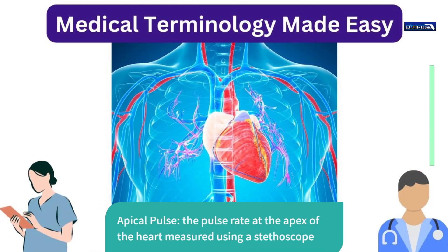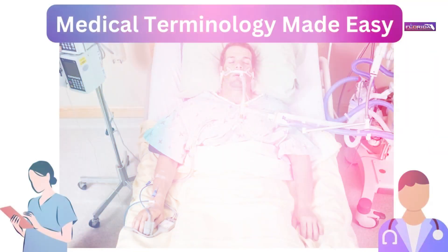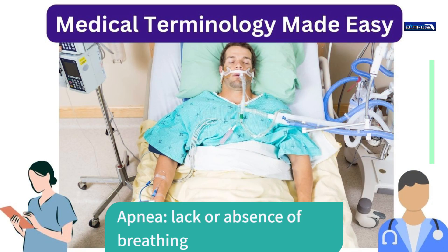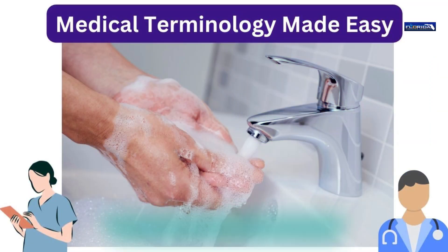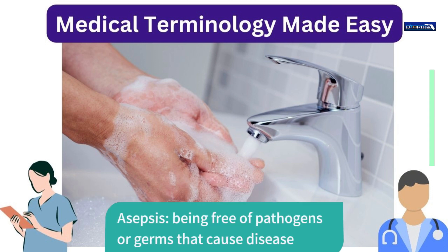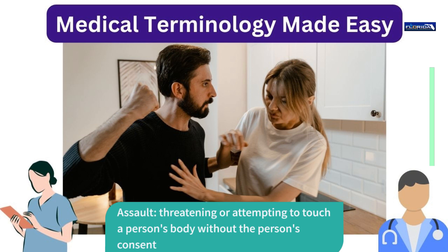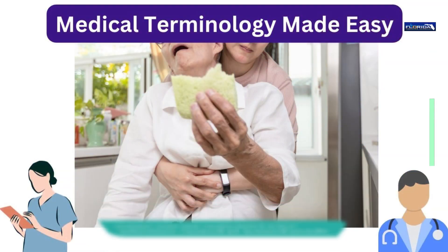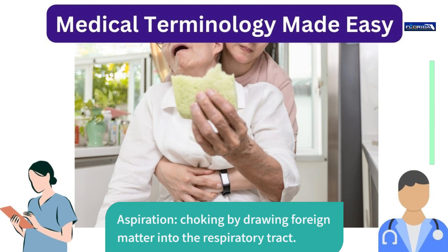Apical pulse: the pulse rate at the apex of the heart, measured using a stethoscope. Apnea: lack or absence of breathing. Asepsis: being free of pathogens or germs that cause disease. Assault: threatening or attempting to touch a person's body without the person's consent. Aspiration: choking by drawing foreign matter into the respiratory tract.